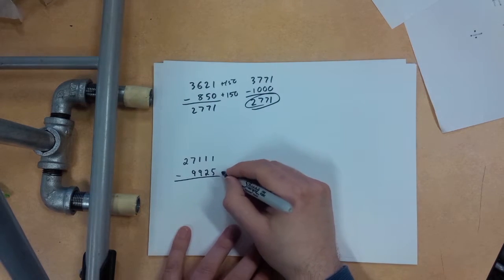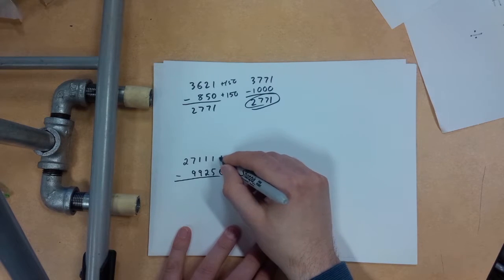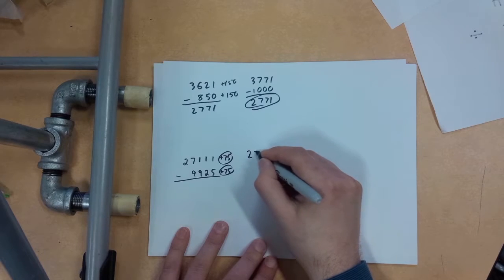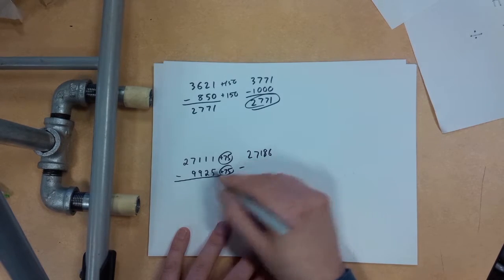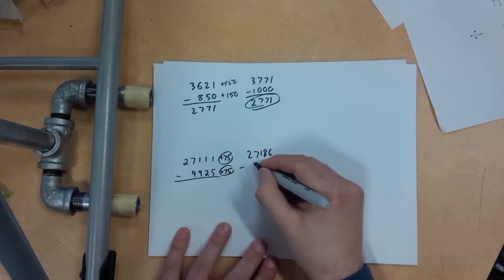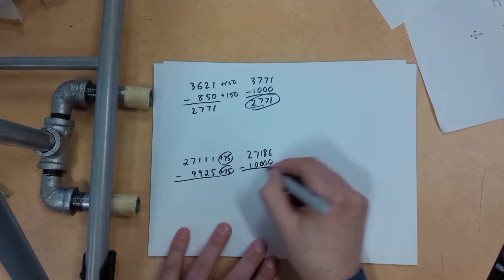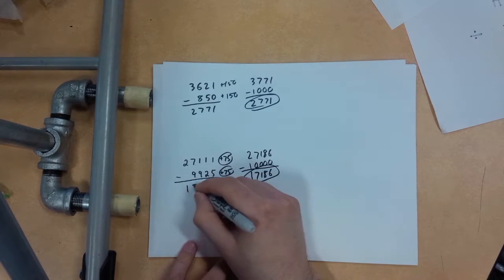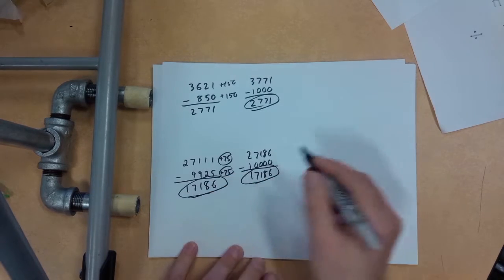And how about this one? If I add 75 to both numbers? Okay, so that'll be 86 at the end. So 27186 minus, add 75, that'll be 10,000. Come on people, this is a piece of cake. 17186. Just like that. And that's what we're going for.